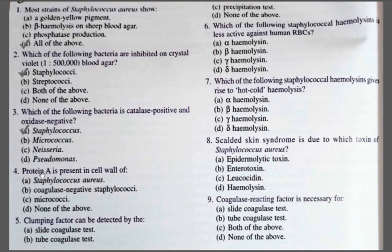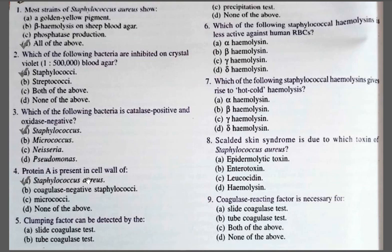Question four: Protein A is present in the cell wall of — A. Staphylococcus aureus; B. Coagulase-negative Staphylococci; C. Micrococci; D. None of the above. Option A, Staphylococcus aureus, is correct. Protein A is a component of the cell wall of S. aureus. By means of Protein A, the bacteria can bind to the Fc portion of immunoglobulins, particularly IgG, forming clumps between S. aureus cells and Ig molecules. This is the basis of the co-agglutination test used for detection of S. aureus.